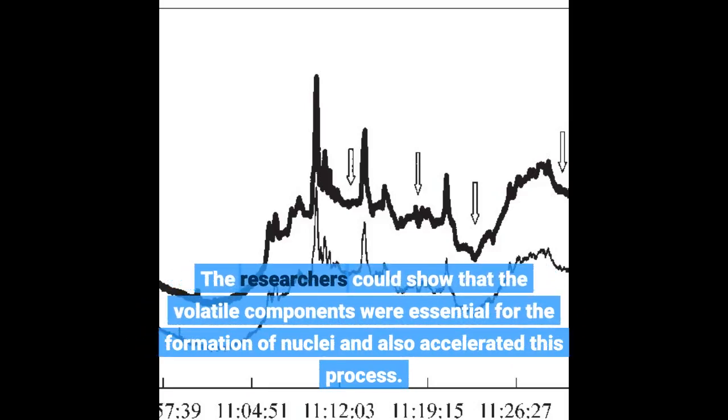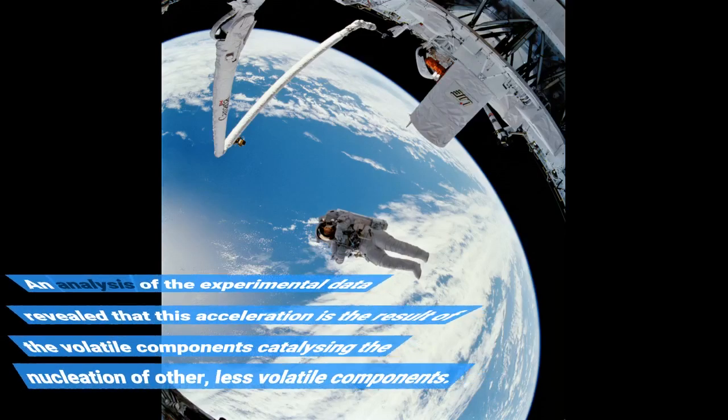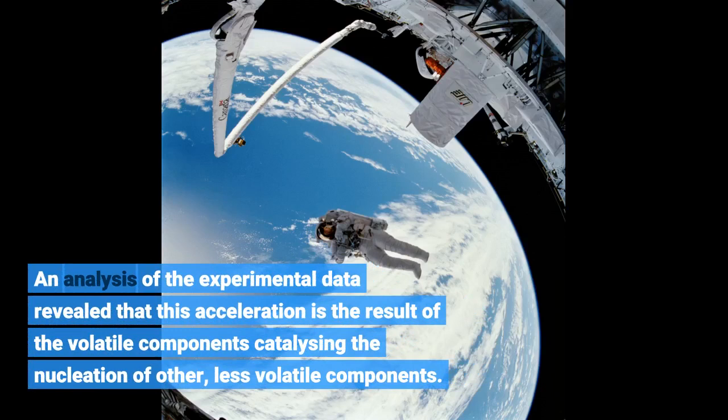The researchers could show that the volatile components were essential for the formation of nuclei and also accelerated this process. An analysis of the experimental data revealed that this acceleration is the result of the volatile components catalyzing the nucleation of other, less volatile components.